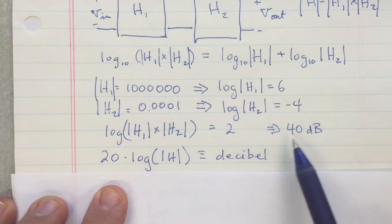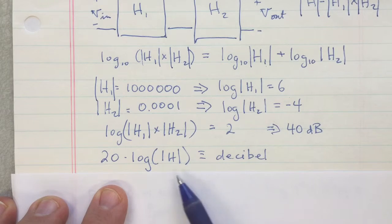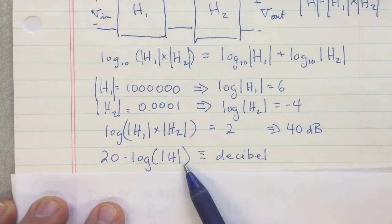And so the decibel is abbreviated dB, and it's defined as twenty times the log of the voltage ratio, 20·log|H|.